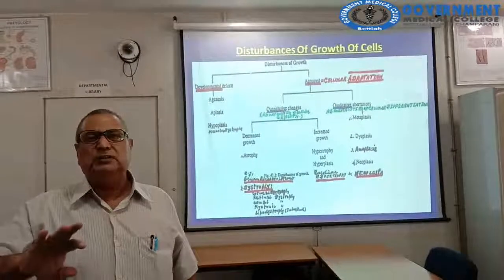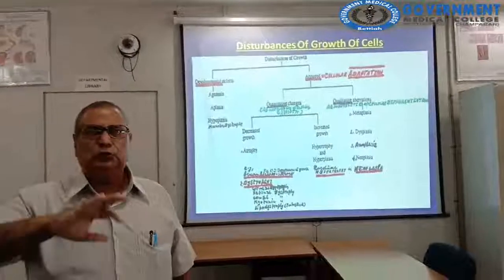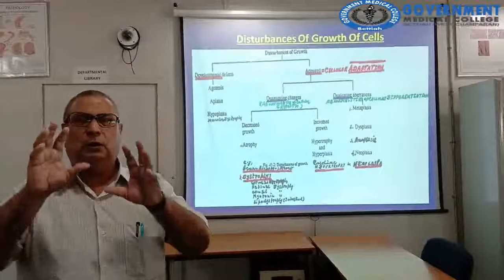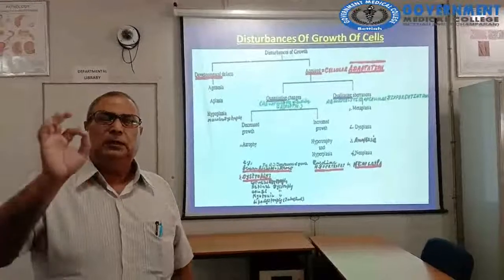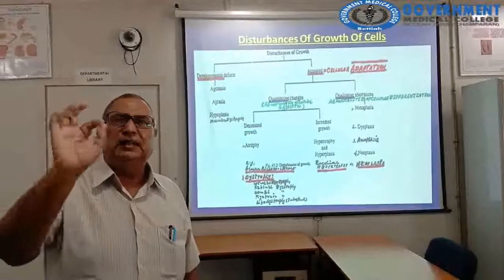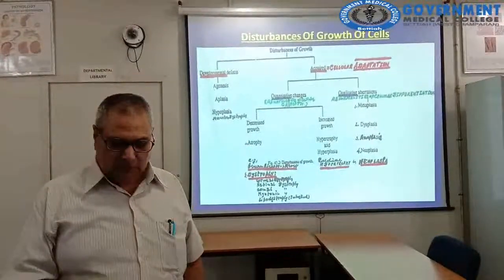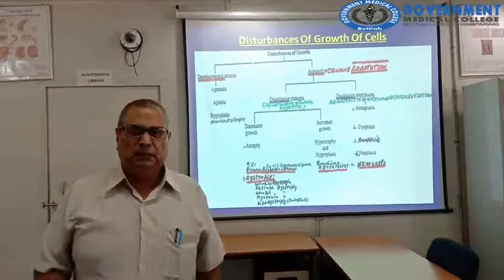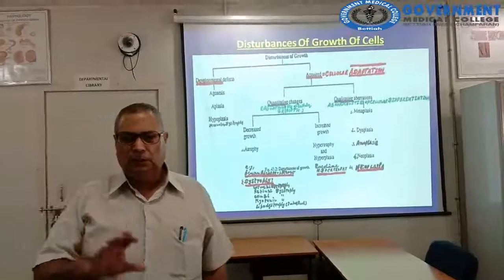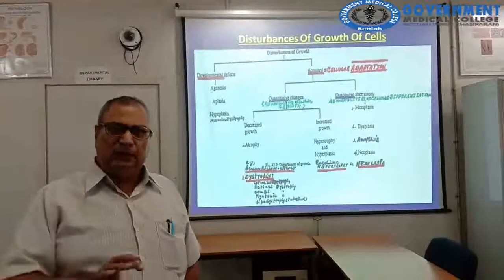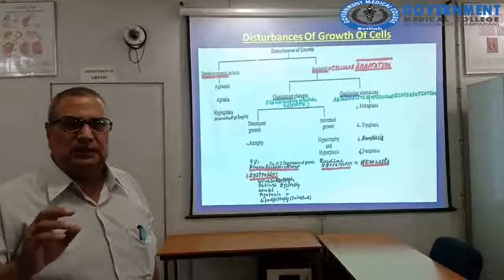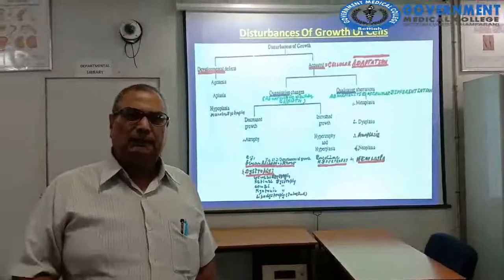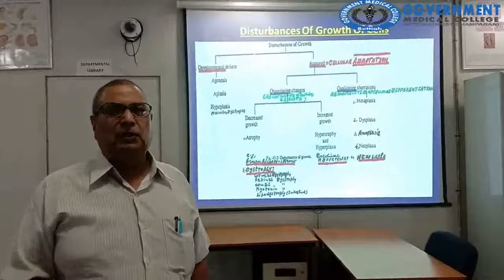Agenesis means without genesis — the organ or tissue has not formed. Then aplasia: the organ has formed but in the form of a rudimentary analage. Then hypoplasia: the organ is not fully developed, it is underdeveloped. Hypo means less and plasia means formation — incomplete development of the organ.